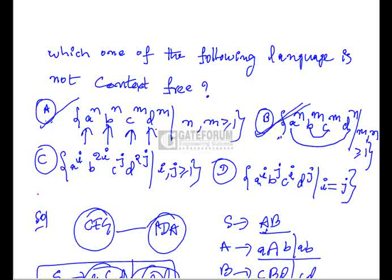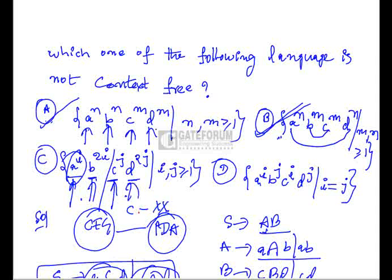Option C is similar to option A, but here b's are double the j's, i.e., a^i b^(2j) c^j d^(2j). Using a PDA, for each a we push two elements, and for each b we pop one element to get an empty stack. Similarly for c's and d's. So option C is also a context-free language recognizable by PDA.